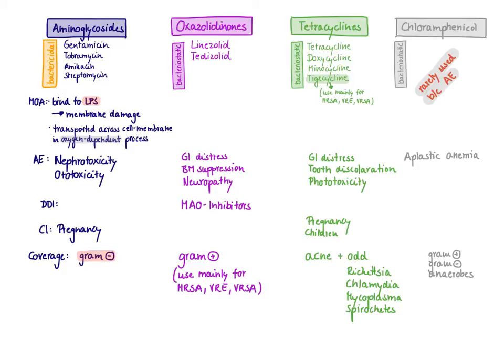Aminoglycosides are often given together with cell wall synthesis inhibitors because combining these two drug classes produces a synergistic effect. If you already destroy the cell wall, the aminoglycosides have an easier path into the cell to reach the ribosomes. Additionally, combining them with cell wall synthesis inhibitors provides gram-positive coverage, because as monotherapy aminoglycosides only act against gram-negatives.